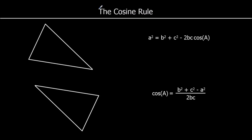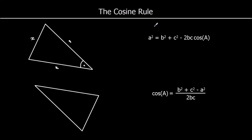For lengths, we use the formula a squared equals b squared plus c squared minus 2bc cos A. We use that when we know two lengths and the angle in between them. So if we know two lengths and the angle in between them, we can find the other length.